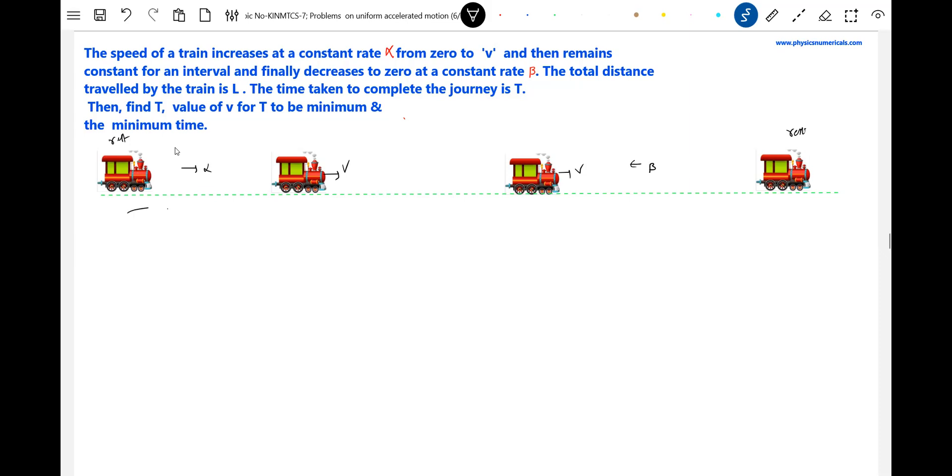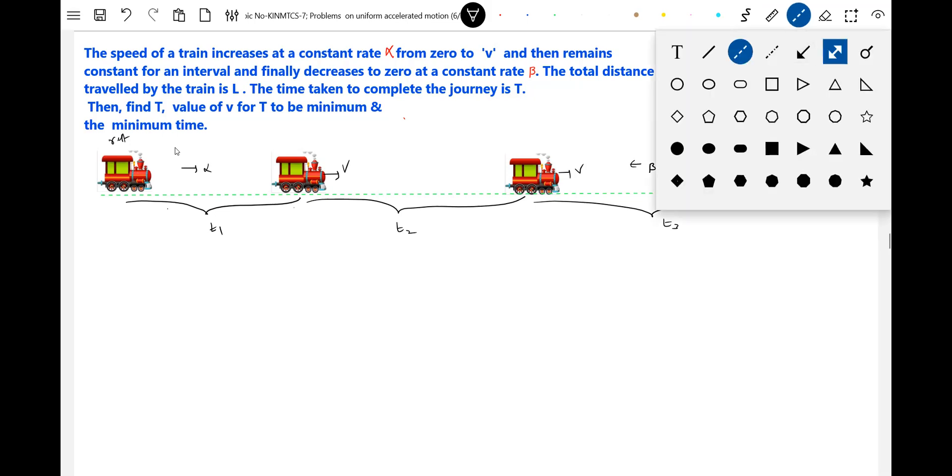The time of journey of this with t1, uniform velocity motion t2, uniform retarding motion t3. Acceleration, uniform velocity, retarding motion. I think these are the information that is given. The total length is L, the total distance covered is equal to L.